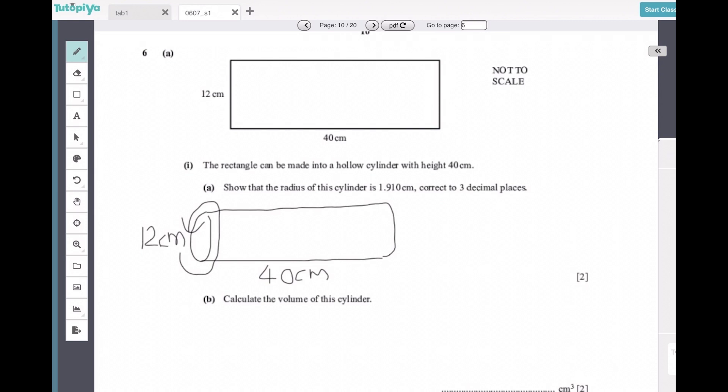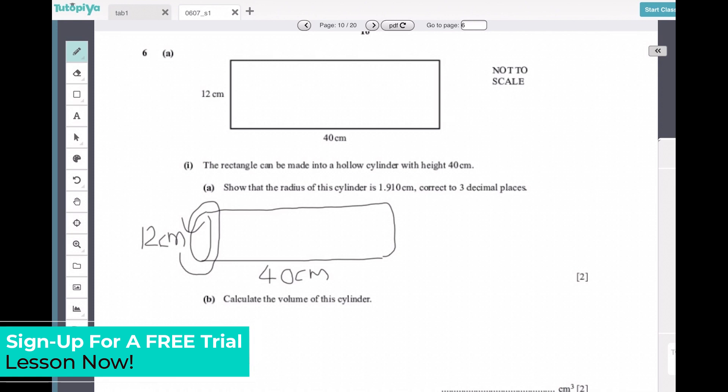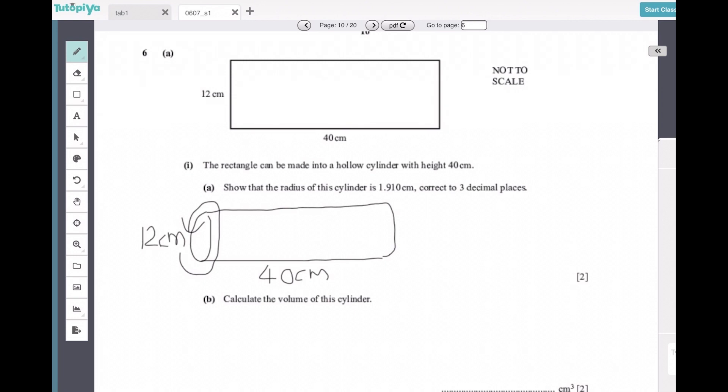So when we talk about entire distance around the circle, we're talking about circumference. Reading on with our question: show that the radius of this cylinder is 1.910 centimeters correct to three decimal places.